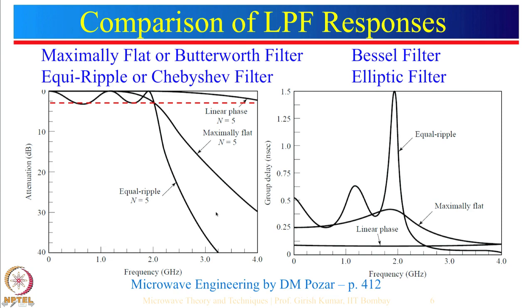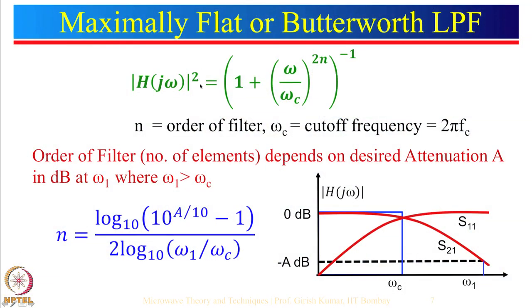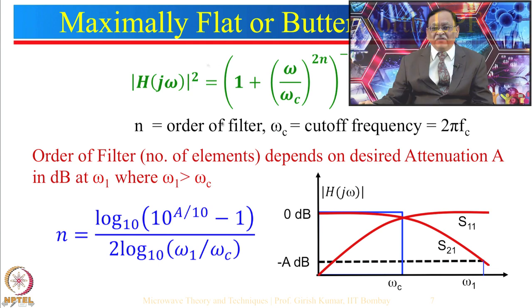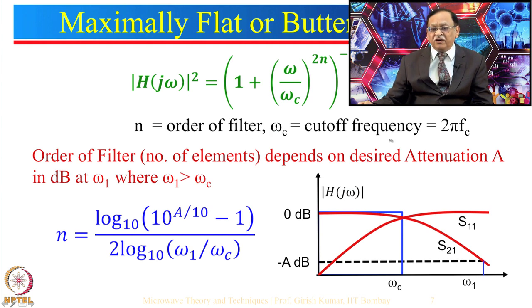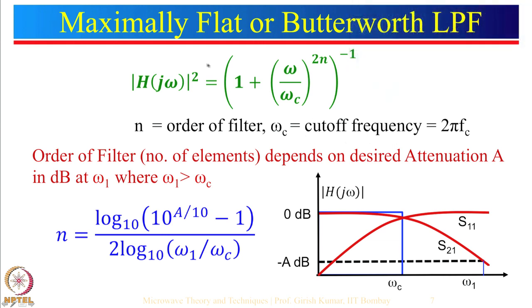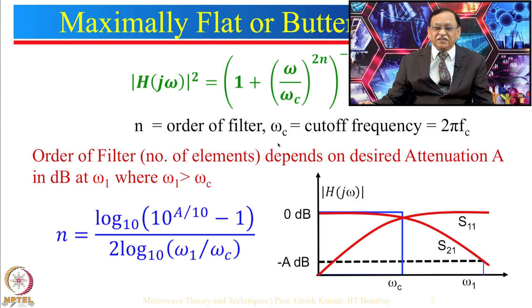Now let us look at the maximally flat Butterworth filter in more detail. |H(jω)|² = 1/(1 + (ω/ω_c)^(2n)), where n is the order and ω_c is the cutoff frequency. Note that ω_c is in radians, so ω_c = 2πf_c — when designing at 1 GHz, use ω_c = 2π × 10⁹, not just 1.